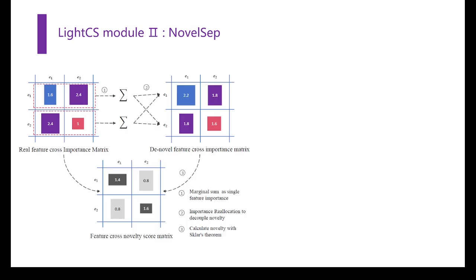The second module, NovelSep, is used to conduct feature cross-novelty calculation. A feature cross with two important single features will be treated as important even if the two single features have enormous information redundancy. So, we define feature cross-novelty to describe the additional information gained from a feature cross.